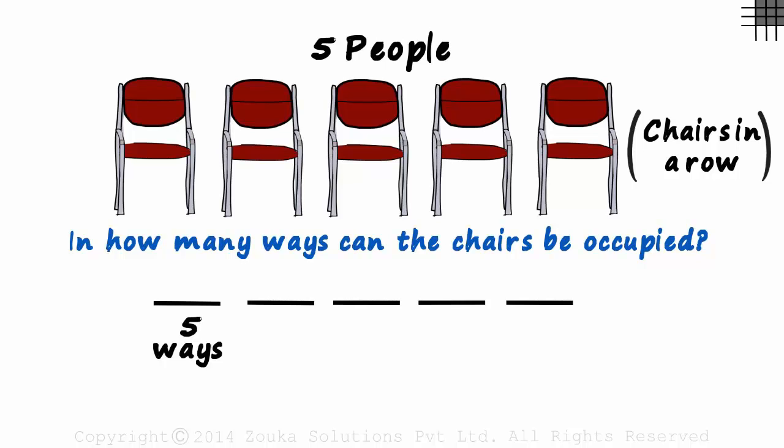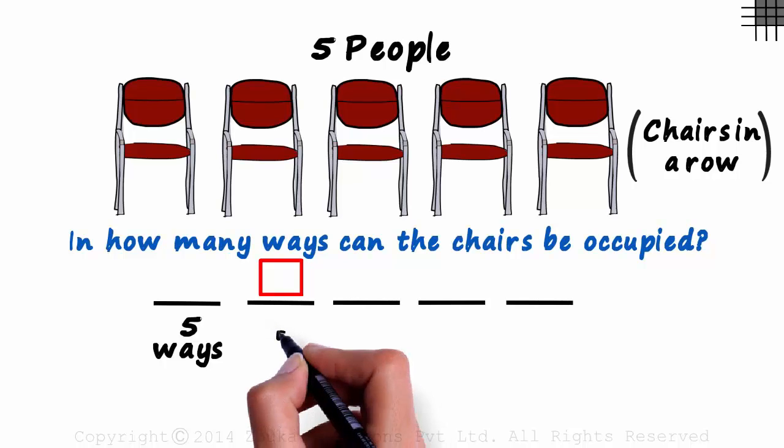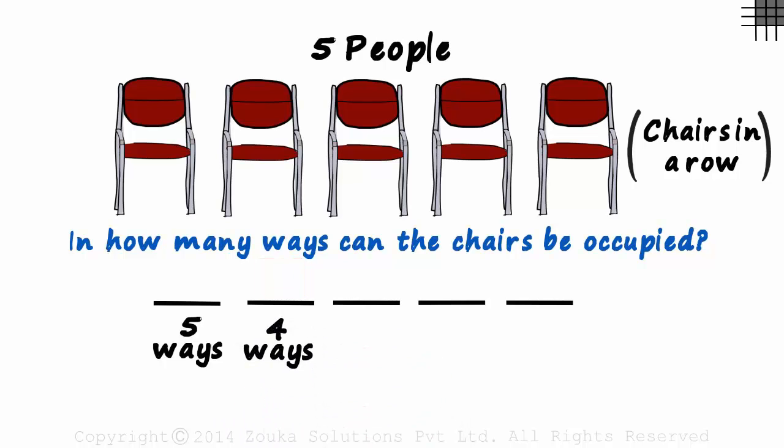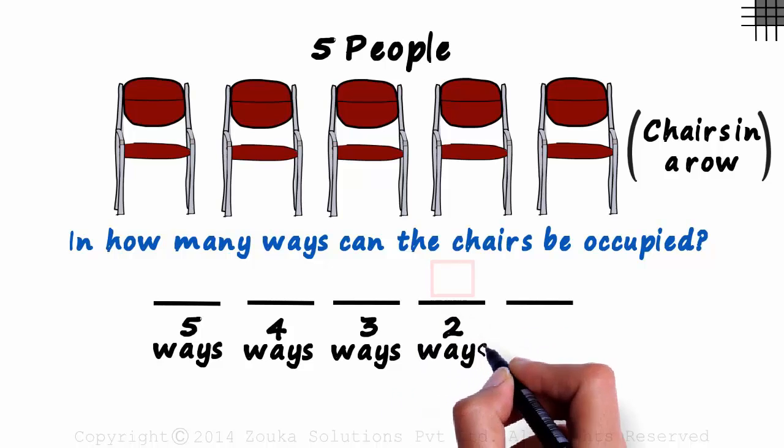Once this has happened, in how many ways can the second chair be occupied? As there are four people remaining, one of those four can be seated on the second chair. The second chair can be occupied in four ways. Once these two chairs are occupied, the third one can be occupied in three ways. And similarly, two ways for the fourth chair and just one person remains for the fifth one.